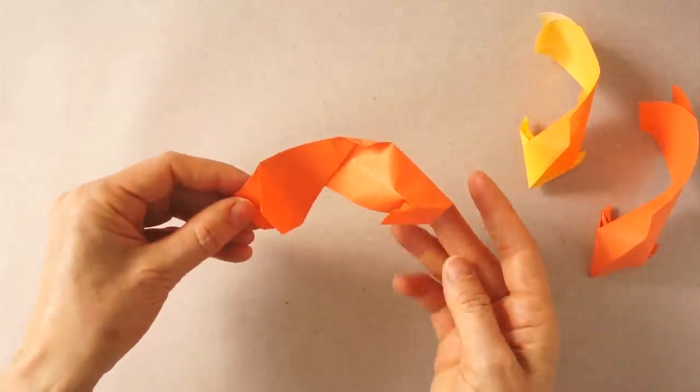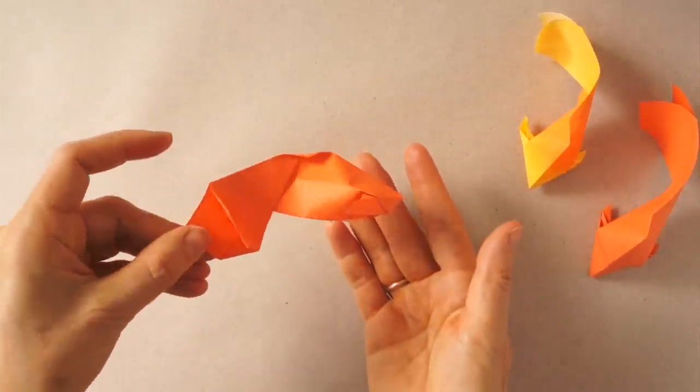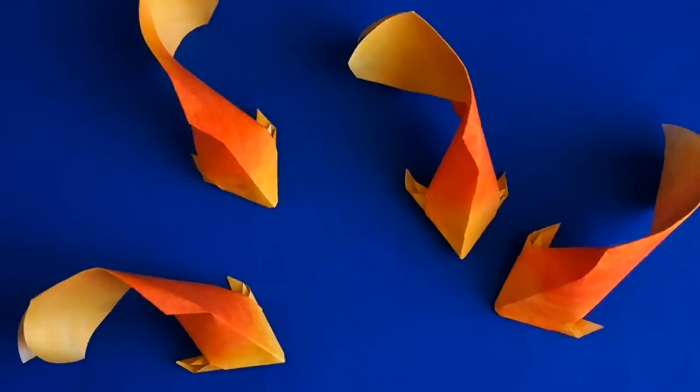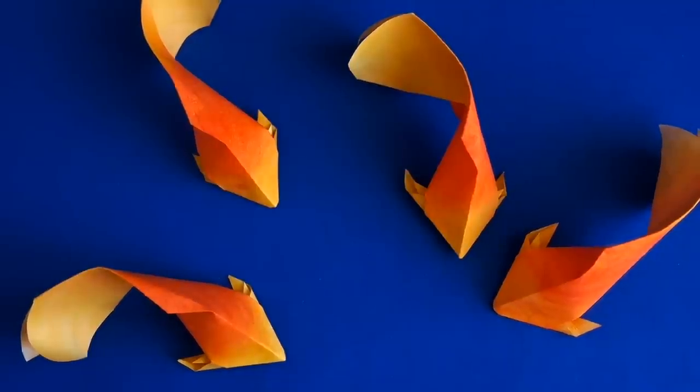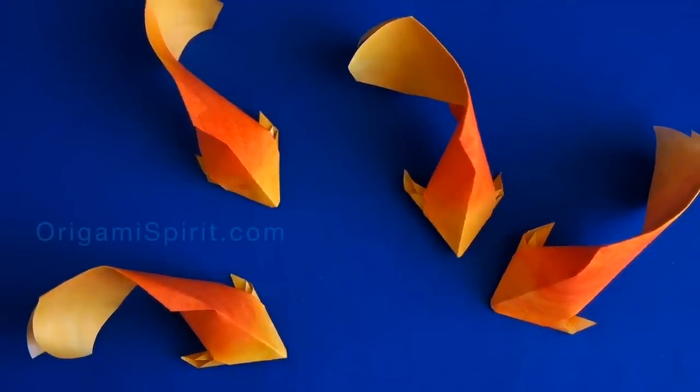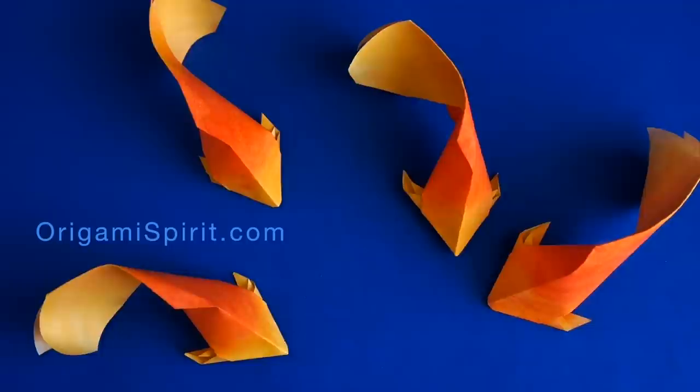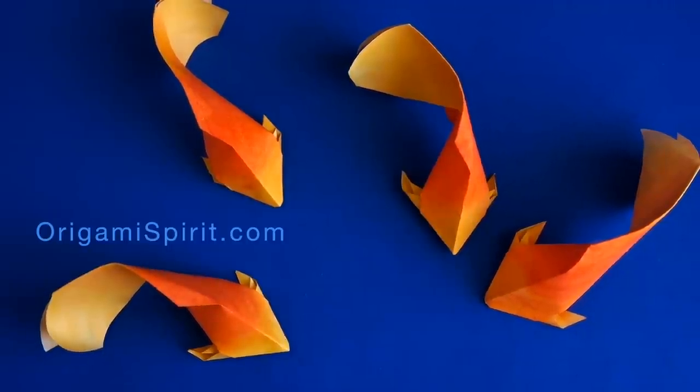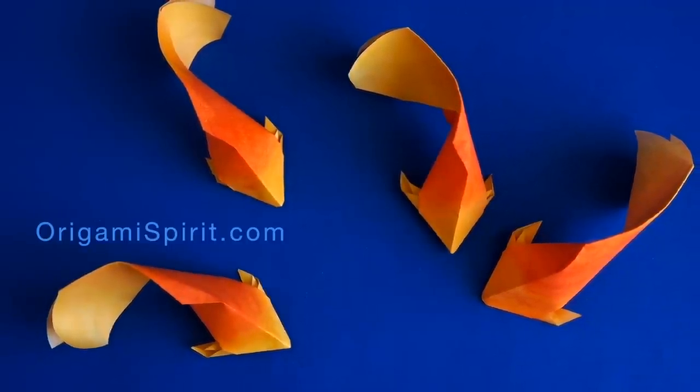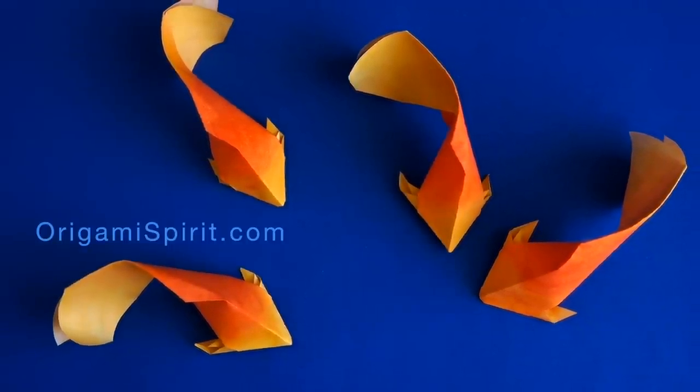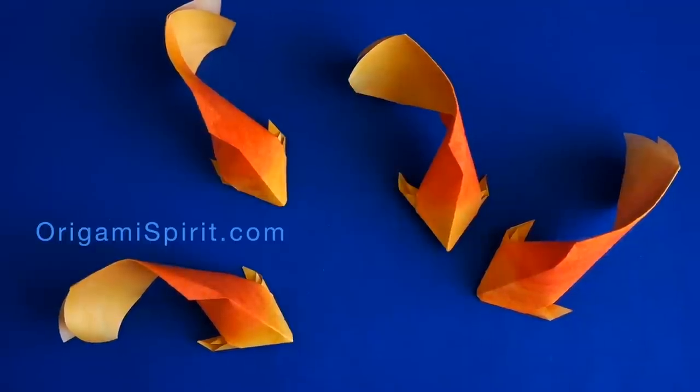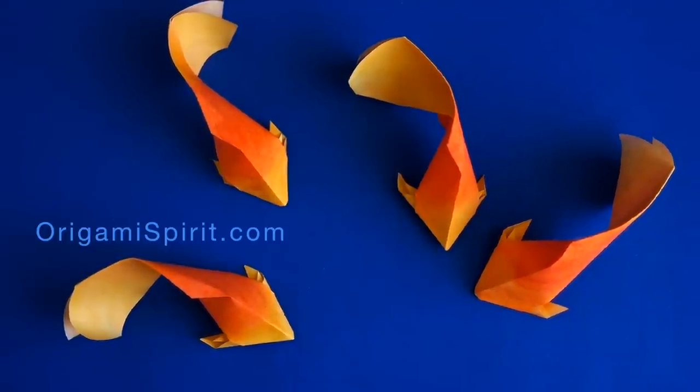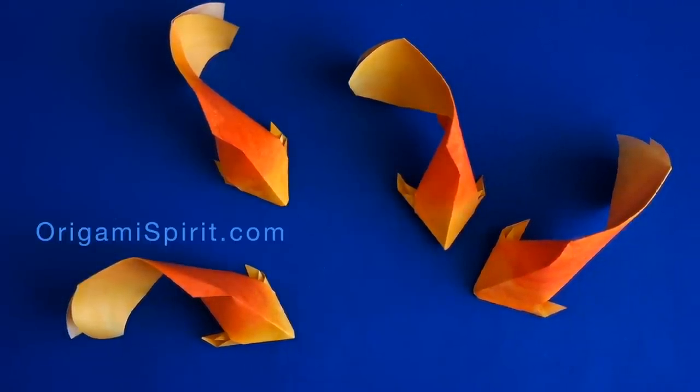For variation, the tail can be curved to one side or the other. Also, the layers of the tail can be curled to the same side, but each one individually. For ideas on how to color the paper, visit our related blog post at origamispirit.com.